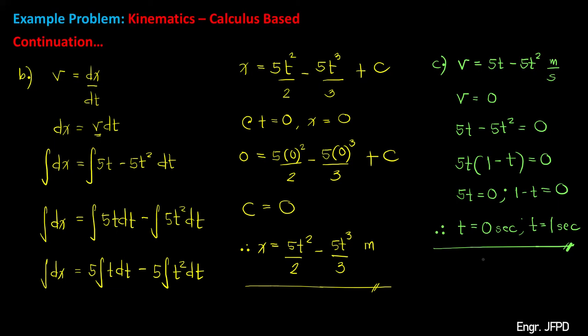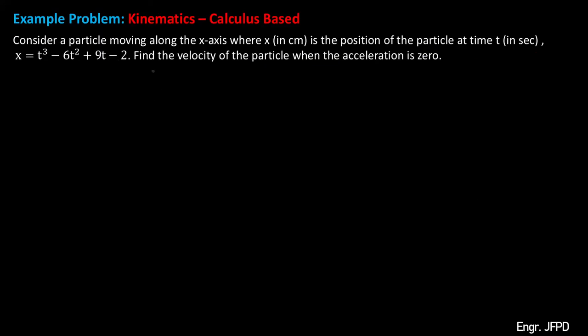Now let's solve another example problem. For our second example, consider a particle moving along the x-axis, where x in centimeters is the position of the particle at time t in seconds, and the function is x equals t cubed minus 6t squared plus 9t minus 2. Find the velocity of the particle when the acceleration is 0. The velocity equals the derivative of position x with respect to time t.